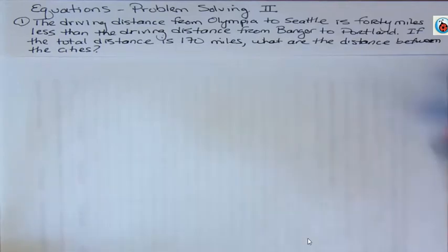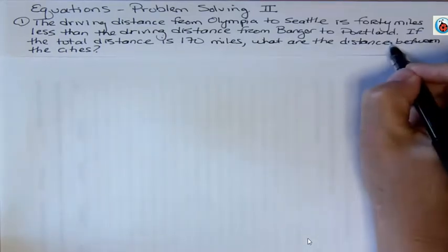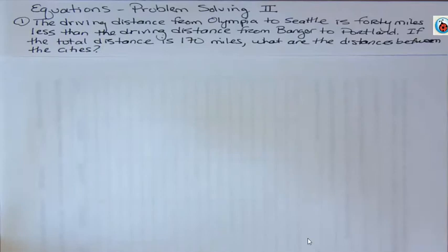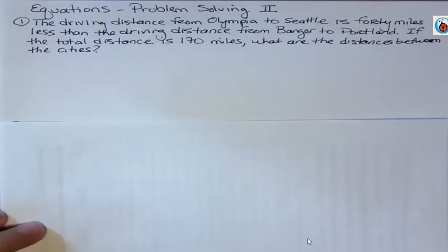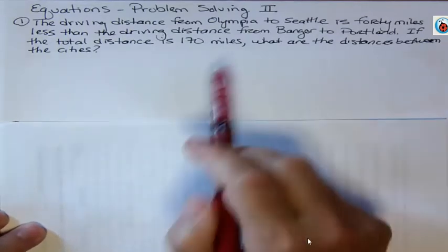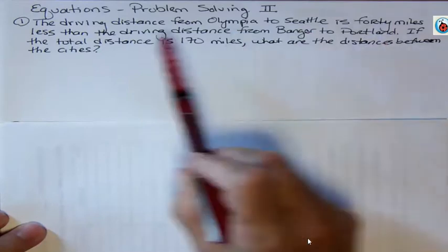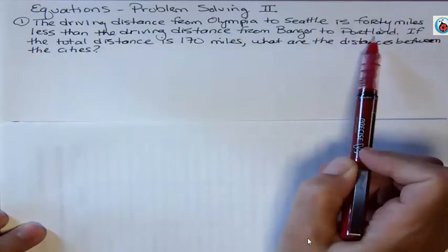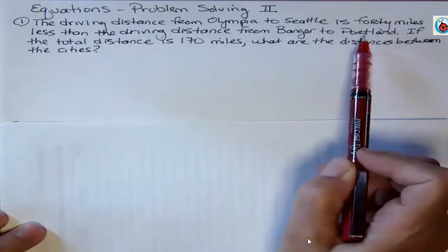I read that correctly, but there is missing an S there. We're talking about the distance between two different cities on two different coasts: Olympia and Seattle, Washington State, and Bangor and Portland in Maine. That's irrelevant. So I want to say which one is our base variable. Olympia to Seattle is 40 miles less than the Bangor to Portland trip, so Bangor to Portland is our base.